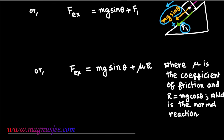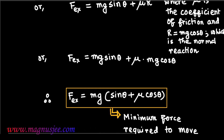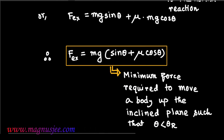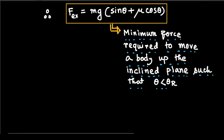Finally, Fex equals mg times the bracket open: sin theta plus mu cos theta. This is the minimum force required to move a body up the inclined plane, valid when theta is less than the angle of repose.